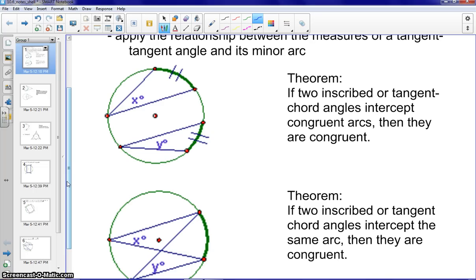First theorem: if two inscribed or tangent chord angles intercept congruent arcs, then they are congruent. Therefore, if the arcs are congruent, the inscribed angles are going to have the same measure. So X would actually equal Y, or it would be congruent. X would be congruent to Y.